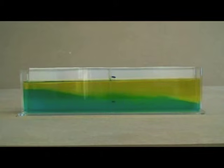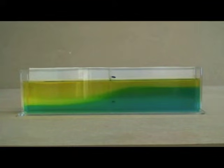The denser blue water quickly flows under the less dense yellow water, then we get an internal wave sloshing back and forth.